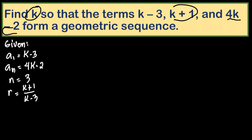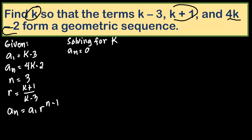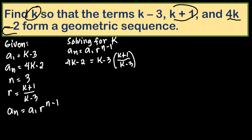We're going to substitute these values into the formula: aₙ = a₁ · r^(n-1). So we have a sub n equals a sub 1 times r raised to n minus 1. We are given aₙ = 4k-2 and a₁ = k-3.